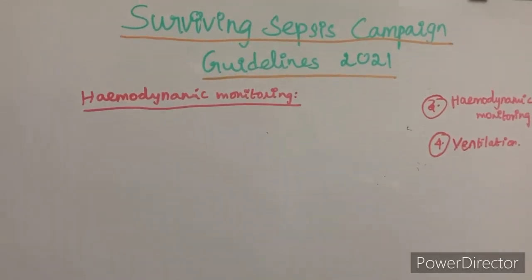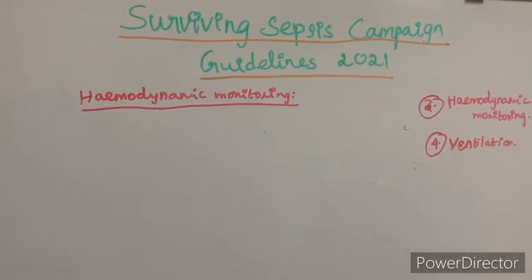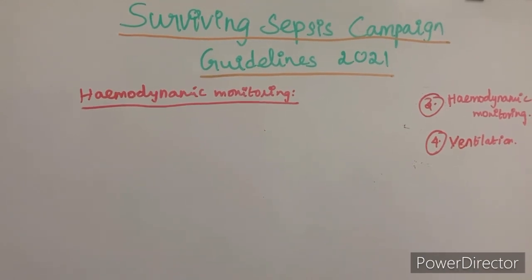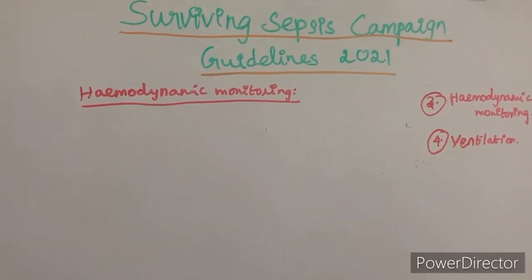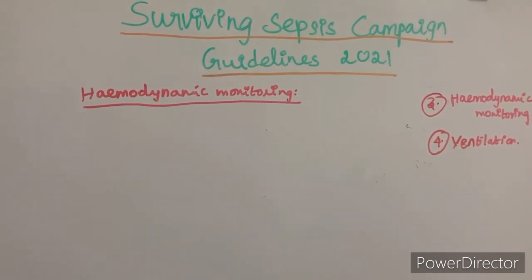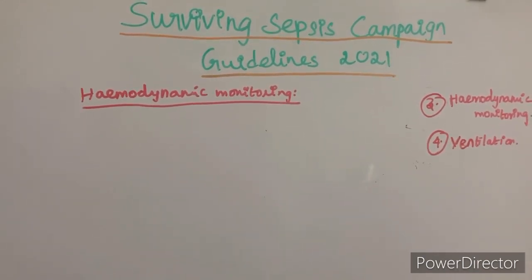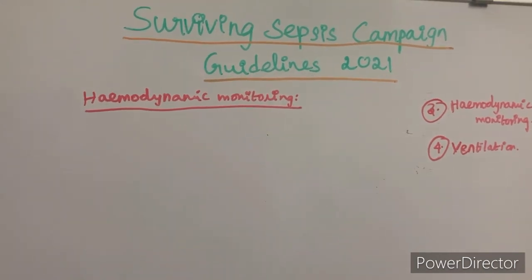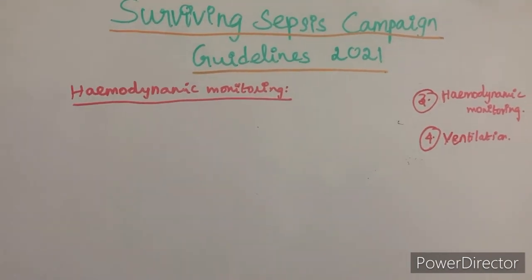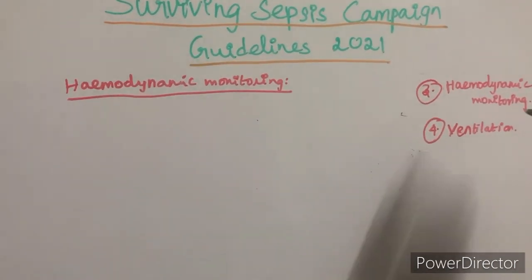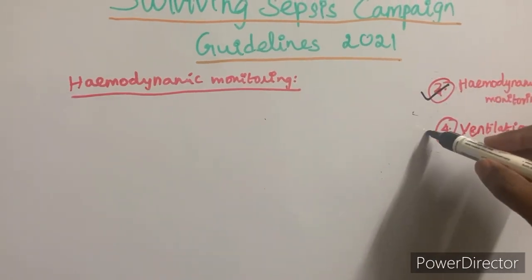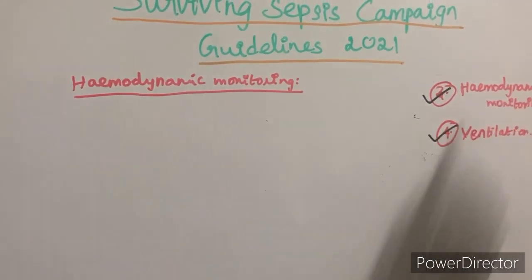Welcome to another topic of discussion — Part 2 of the Surviving Sepsis Campaign guidelines 2021. In Part 1, we discussed screening of sepsis patients and initial resuscitation. Now we are going to discuss the hemodynamic monitoring and ventilation parts.